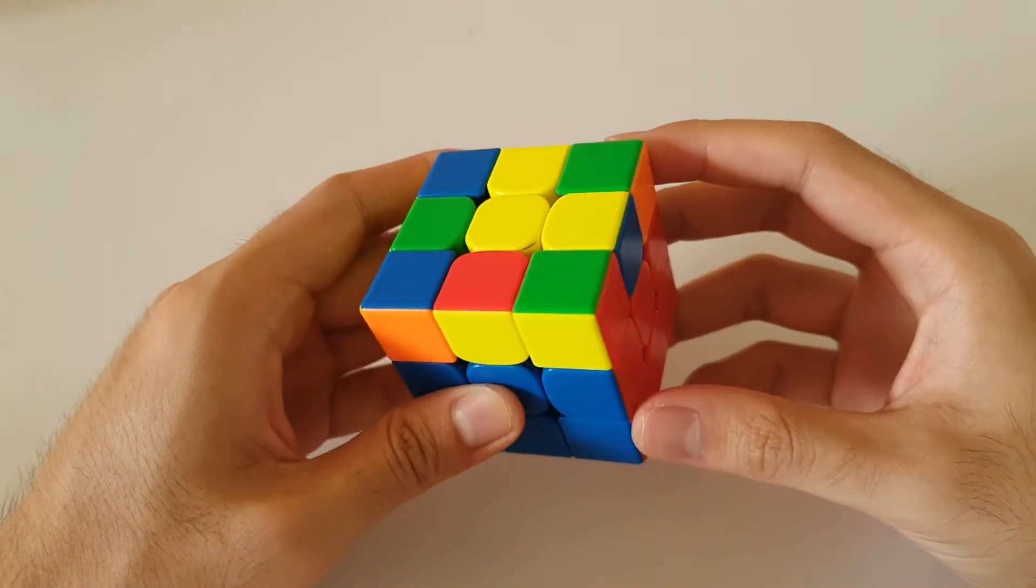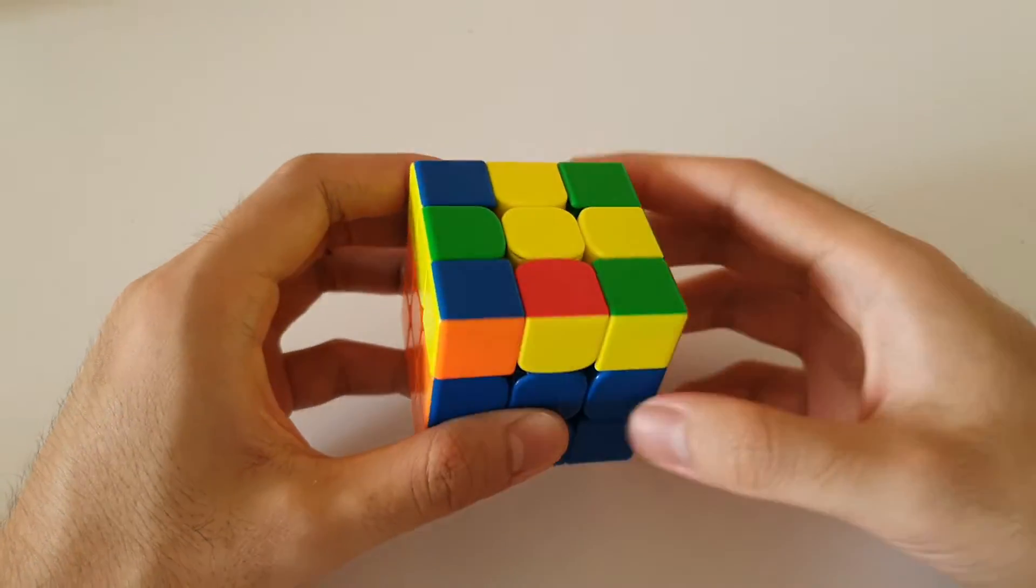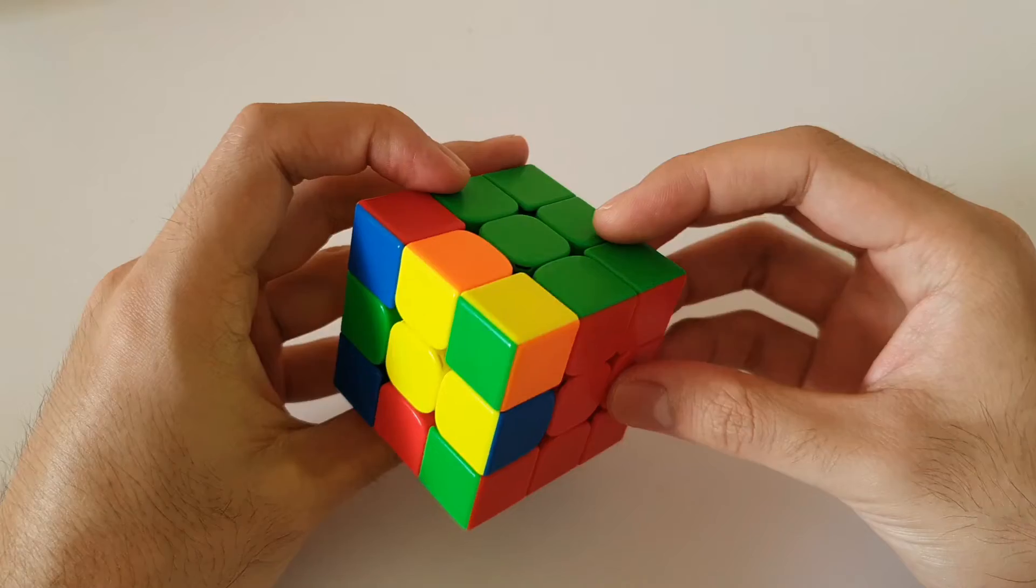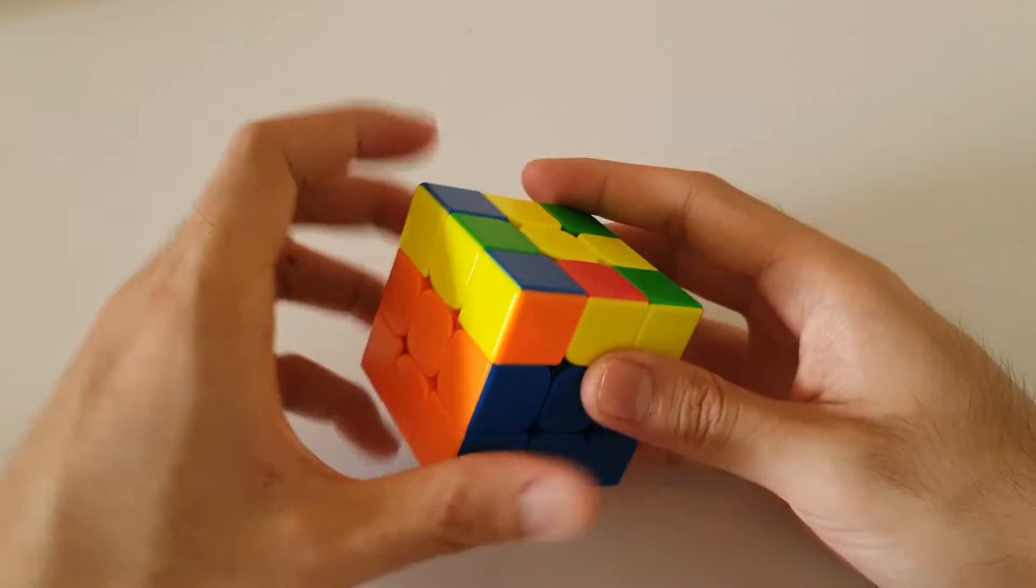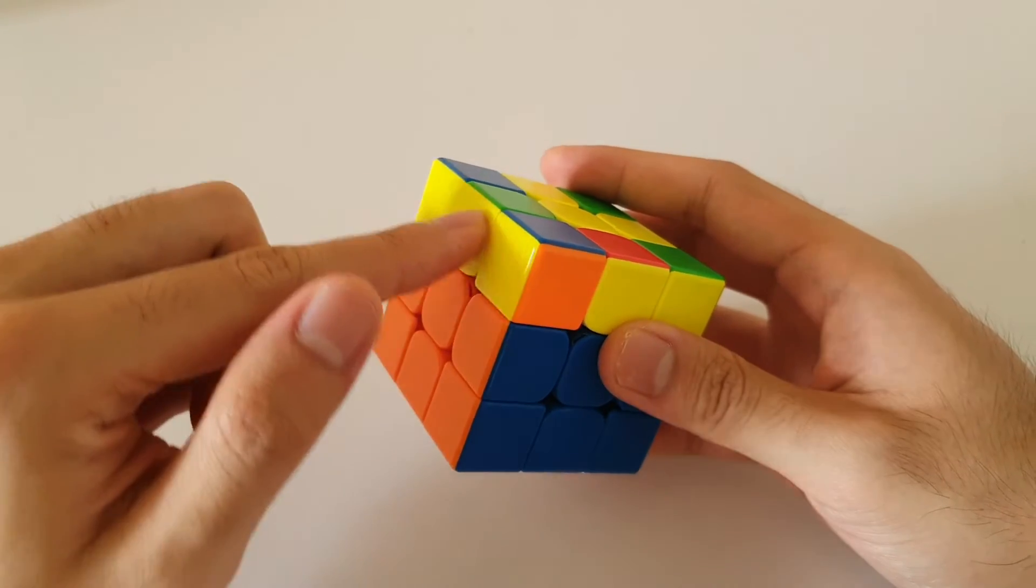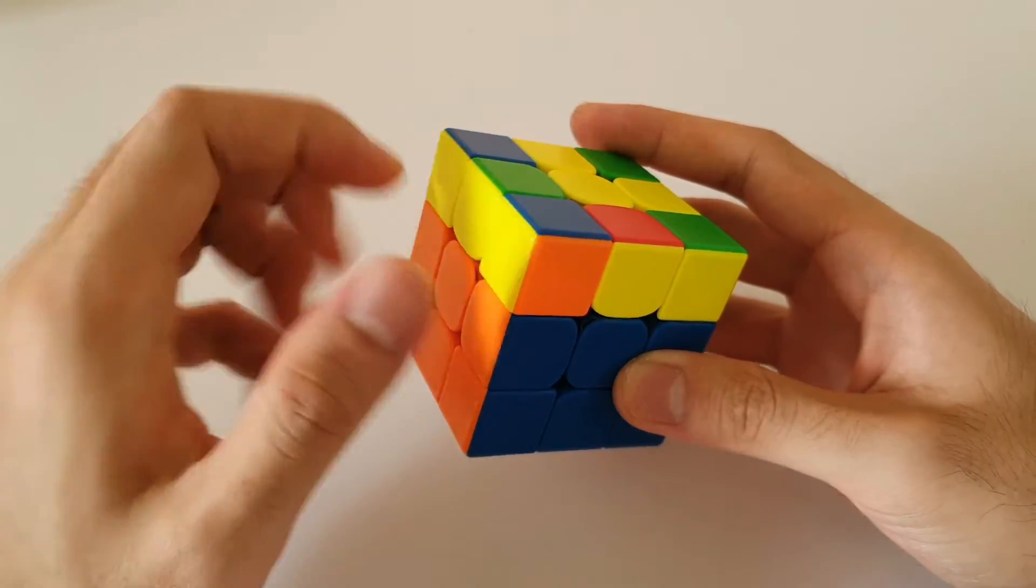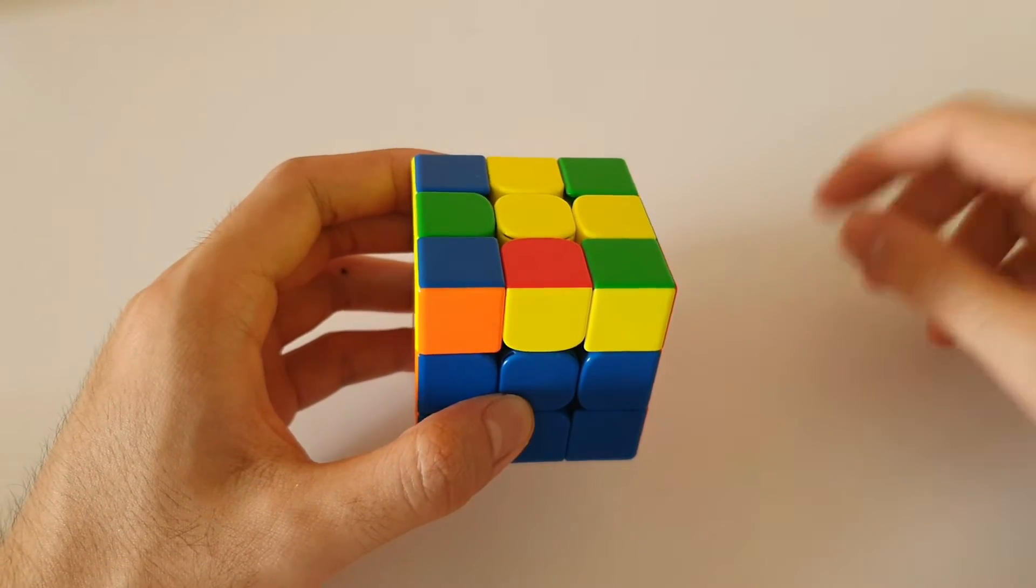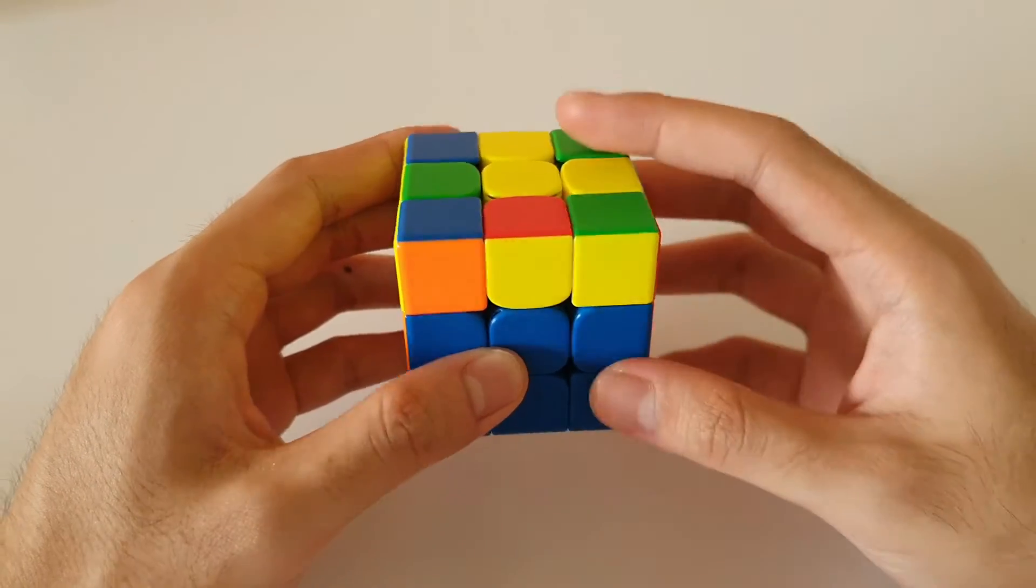Alright, so the second last L-shaped case is this one here. Once again, L-shaped on the top layer. This time, no headlights. We have a 2x1 bar at the front and a 3x1 bar on the side. For this case, you always want to hold the 3x1 bar on the side. This can be considered the front version of the algorithm because the 2x1 bar is at the front.